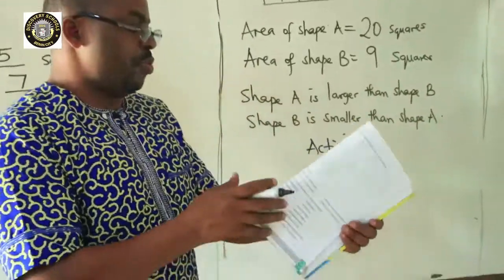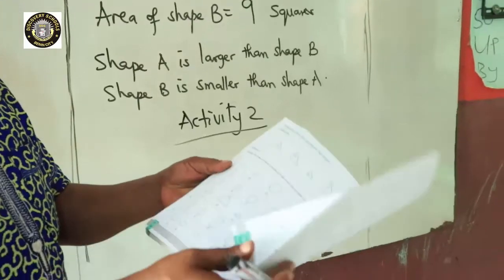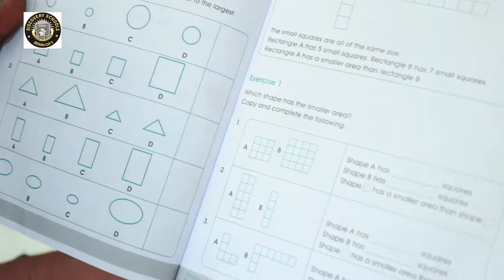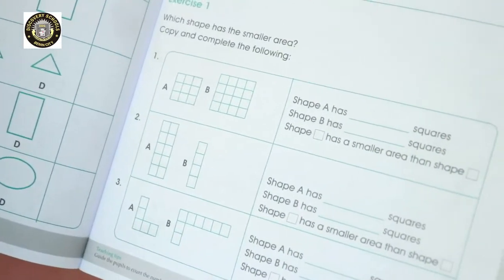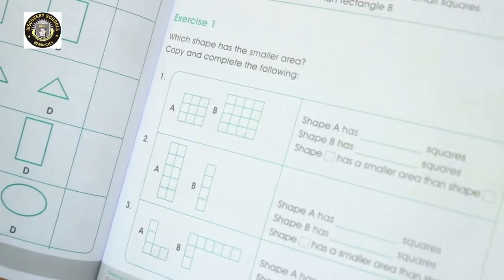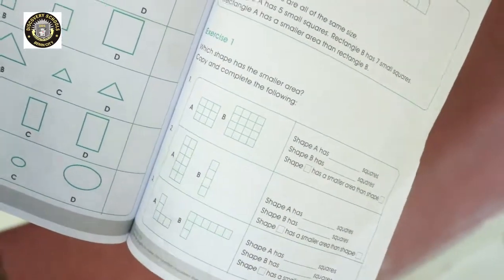Activity 2. Please refer to page 163 of your master's book. Exercise 1. Which shape has the smaller area? Copy and complete the following. Let me look at number 1 for you.